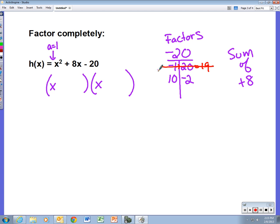If you think through your factors, hopefully you come up with positive 10 and negative 2. If I multiply those together, I get negative 20, and if I add those together, I get positive 8, which is what I want because that's the middle term.